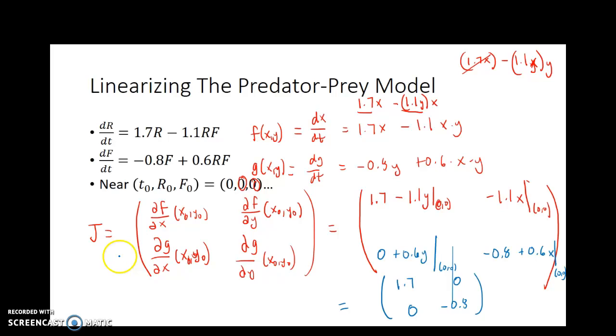And the linearization theorem tells me that I can linearize the system dy dt by taking the Jacobian times the variable matrix, which in this case is 1.7, 0, 0, negative 0.8, times my variable xy matrix. And that leaves me with 1.7x in the top, if I multiply that out, and I get negative 0.8y.